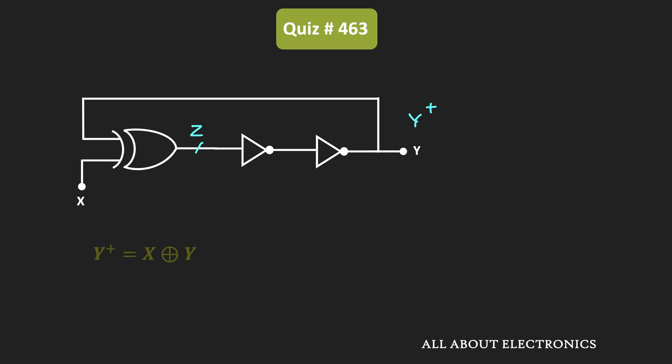This Y+ is equal to X XOR Y, where Y is the previous output of the logic circuit.